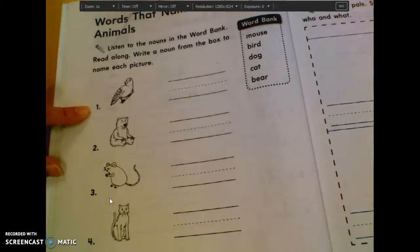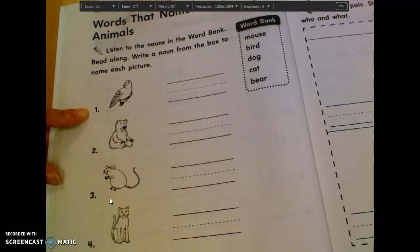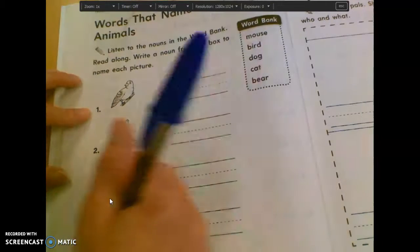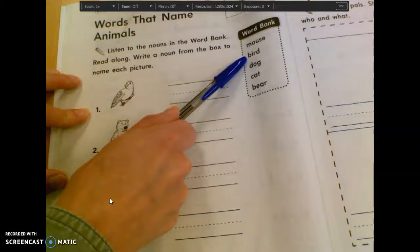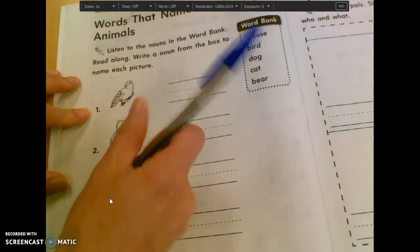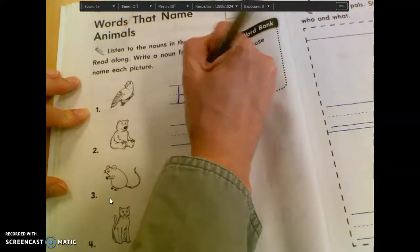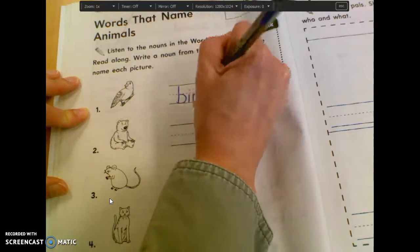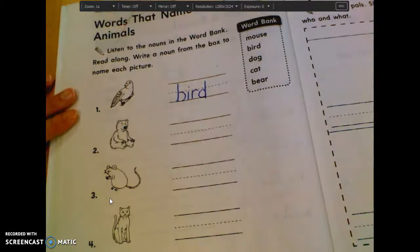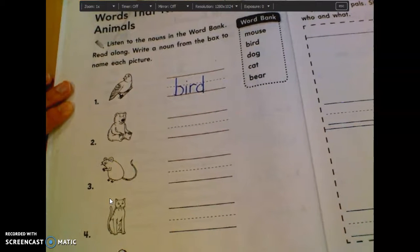So like picture number one, what is that a picture of? Bird. Bird. So you're just going to write the word bird, which is the second word in the box, on the line. So B-I-R-D. Bird.